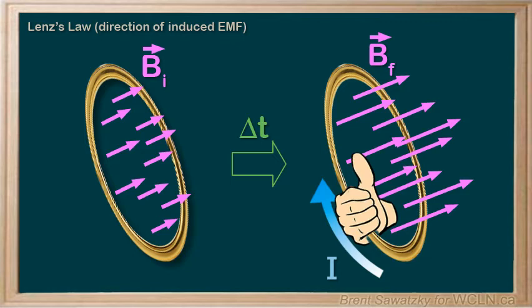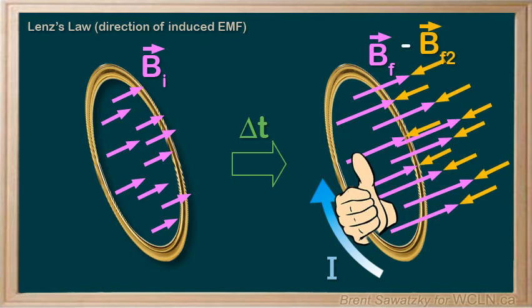With our thumb going clockwise with the current, and our fingers curling around the conductor like this, we can see that our fingers, an induced magnetic field, would be going to the right on the outside of the loop, and to the left on the inside of the loop, through the middle of the loop. So, this time, our induced magnetic field opposes the increase of our magnetic field. It resists the change.